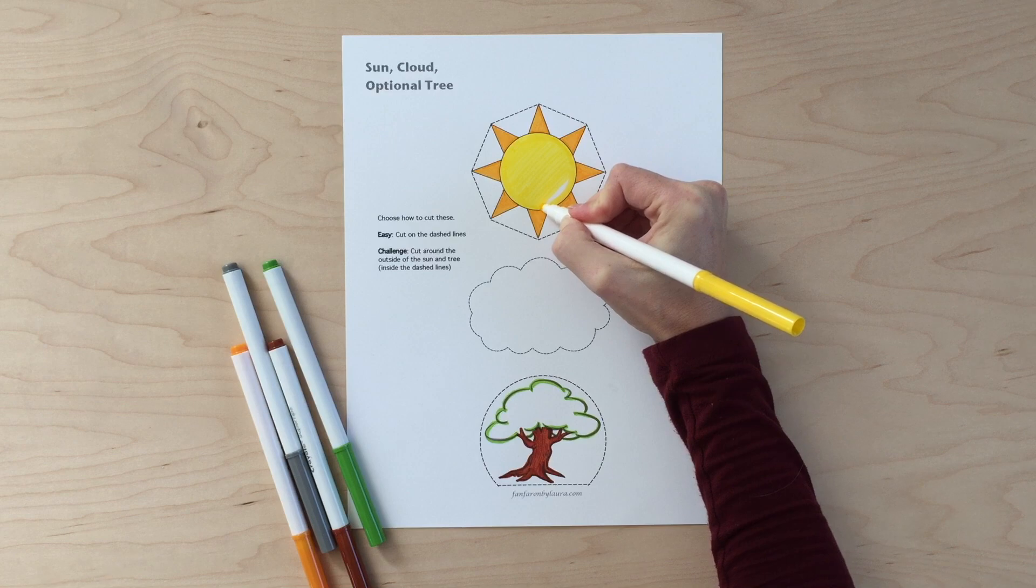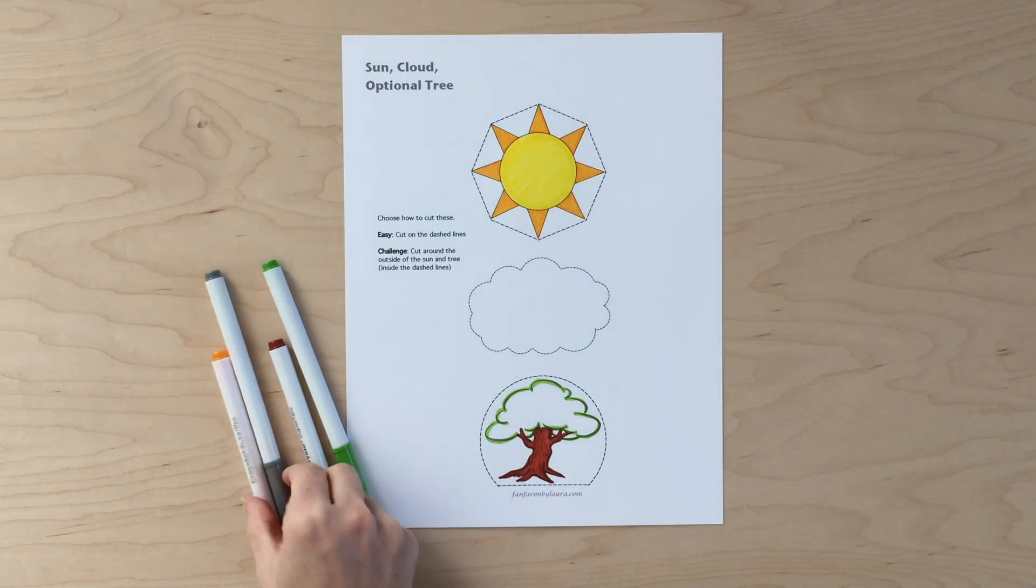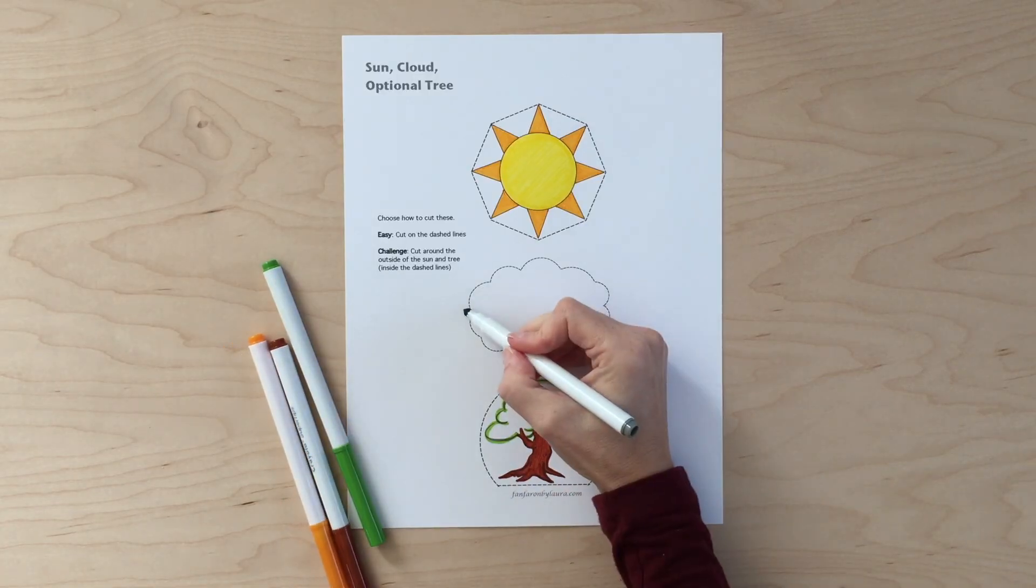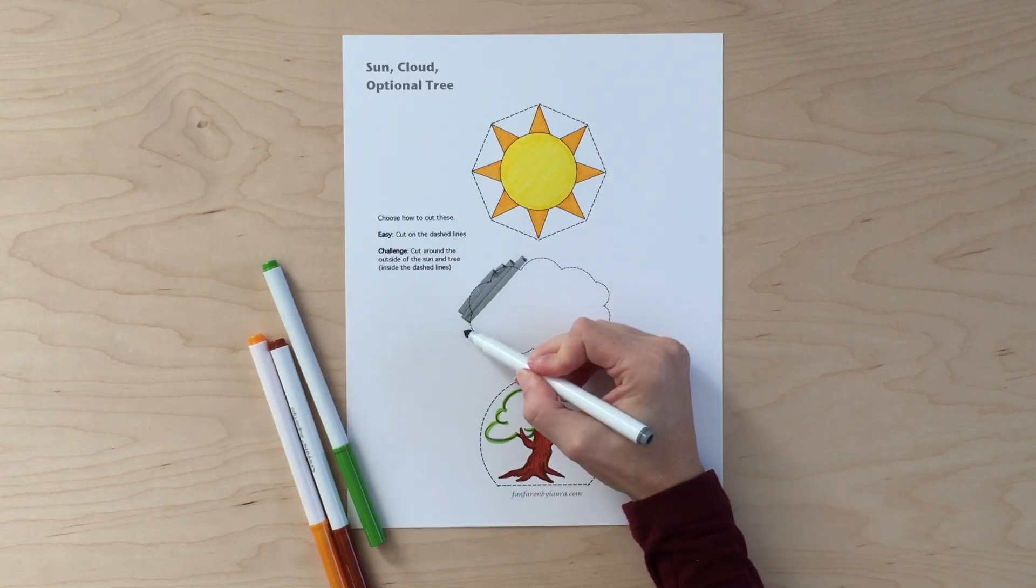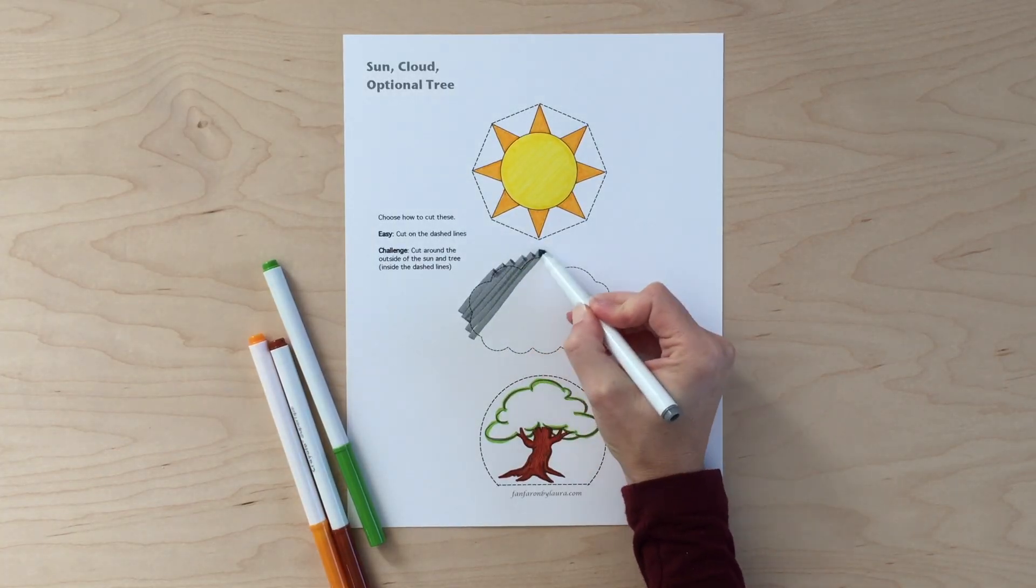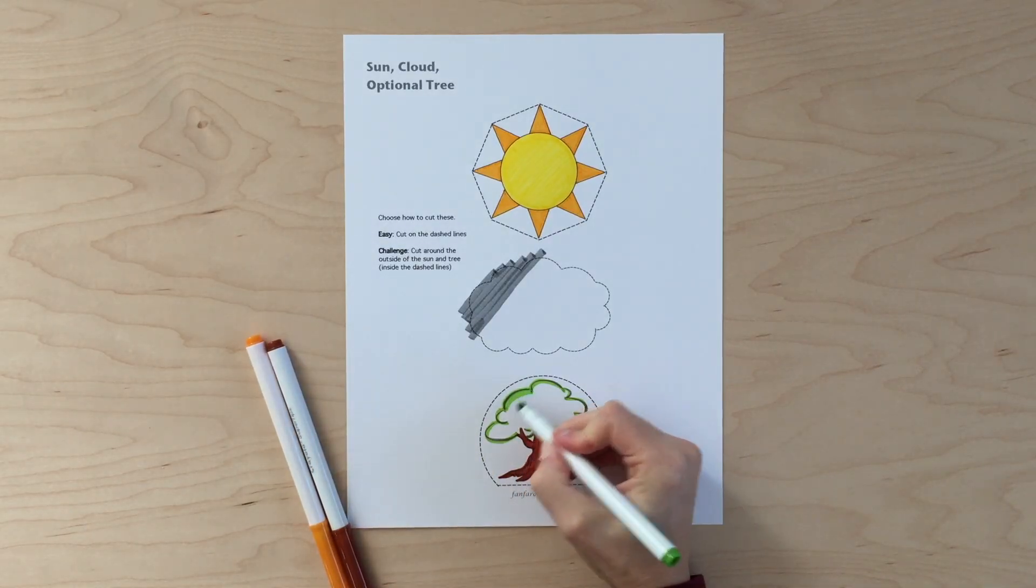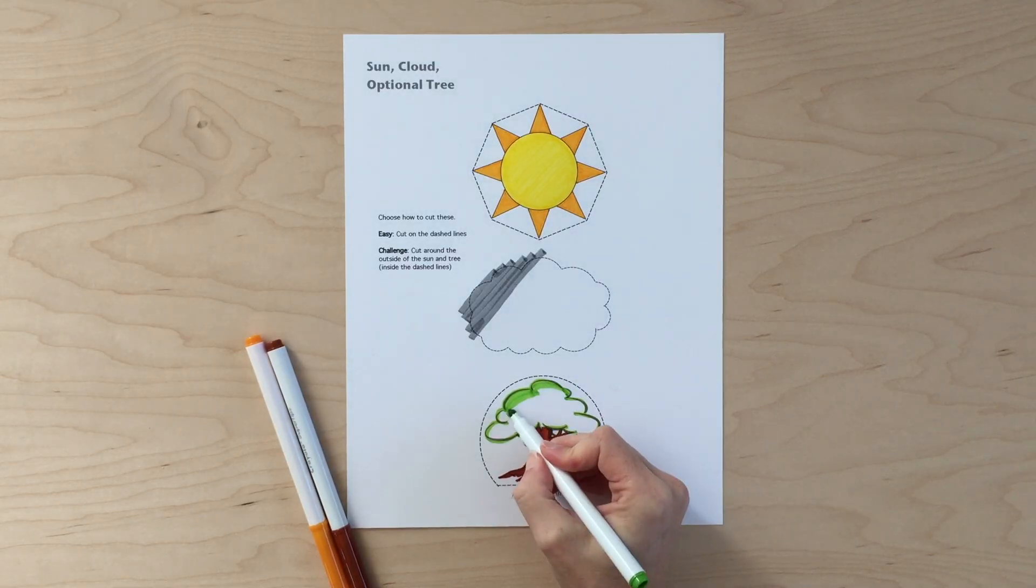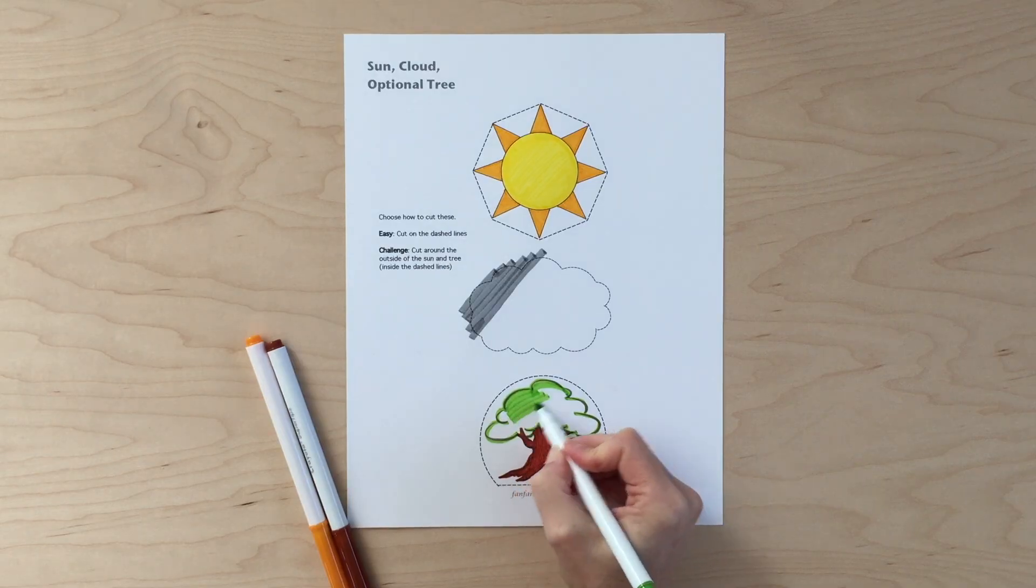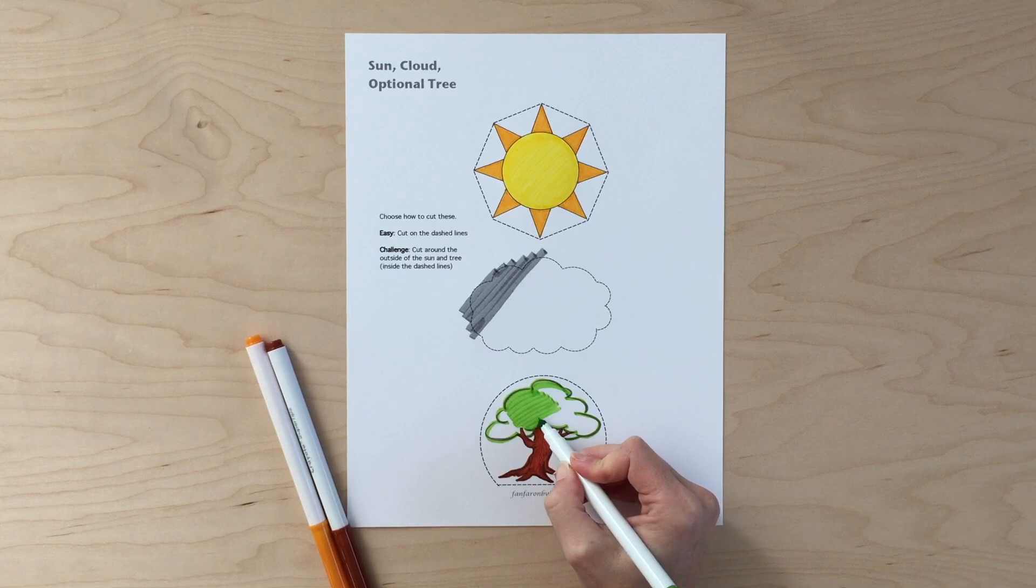Start by coloring the different elements of the water cycle. I don't have to color in the lines because I'm going to cut it all out. This tree is optional. If you want to include transpiration, where the trees let water back into the air as part of your water cycle, then you'll want to color the tree, but feel free to leave it out.